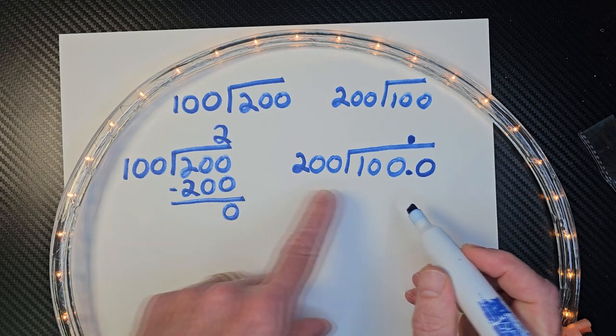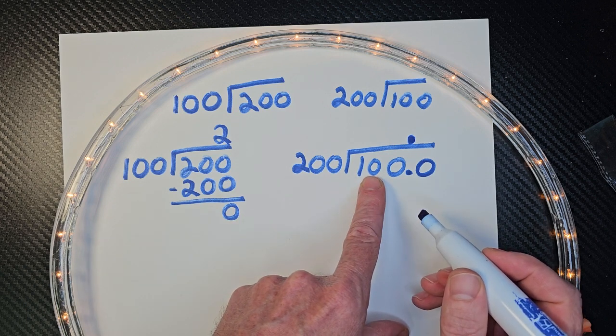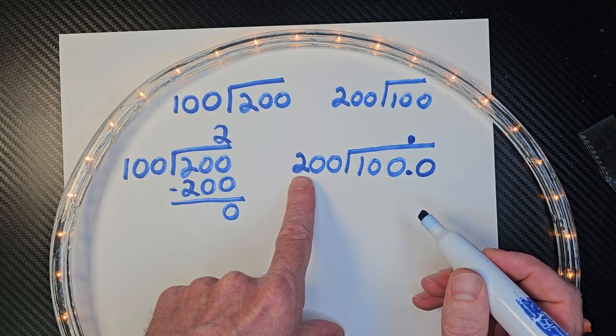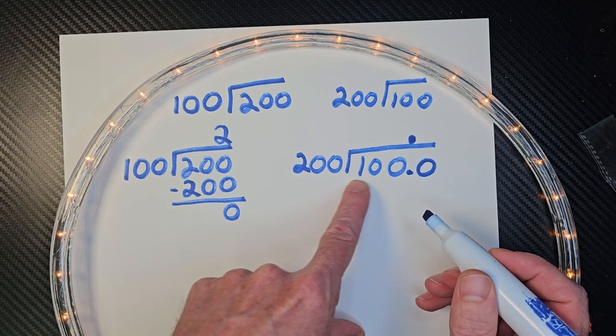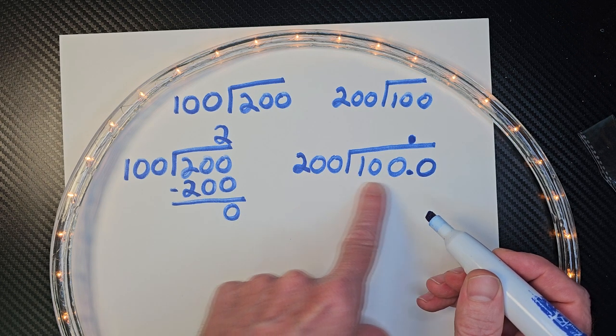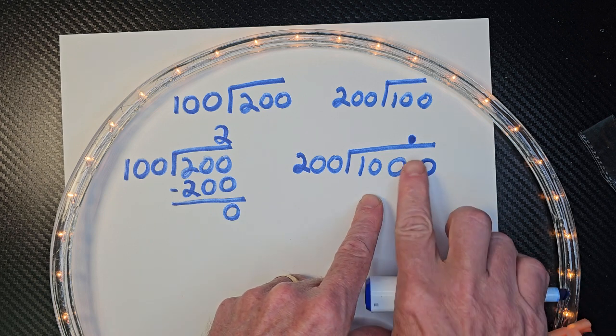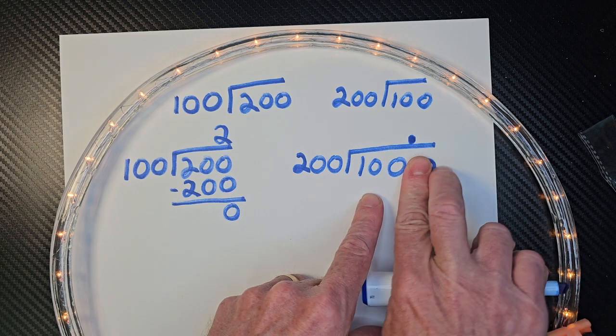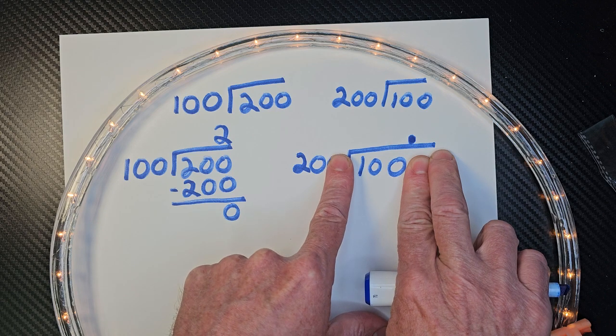So now I kind of look at this problem right here, okay? And so it says, how many times can I put 200 into 1000? All right, so what do you think? I'm just going to take this zero out here, all right, take that zero. And then I'm going to take that zero.